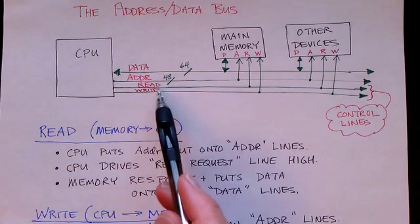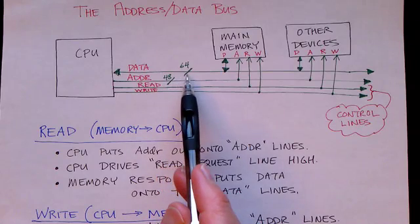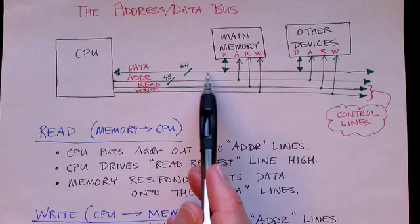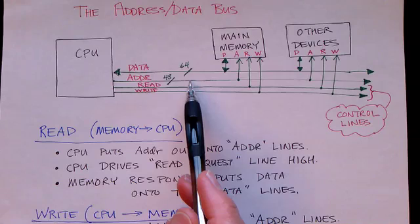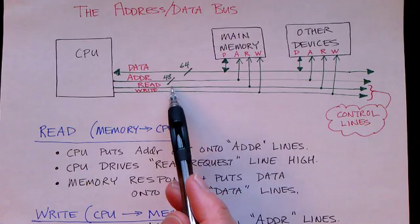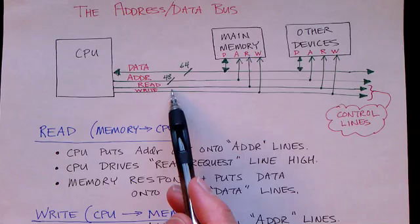So the bus consists of several different components. One is the collection of lines that are the data bus lines, and then we have the address lines, and then we have some control signals here. Some control lines, and I've shown two.